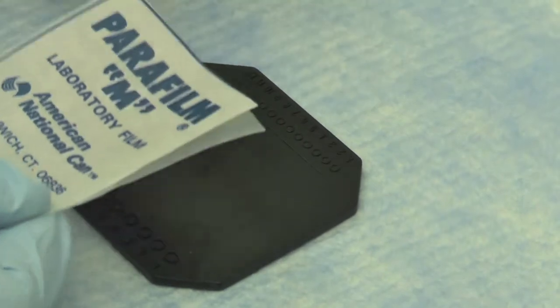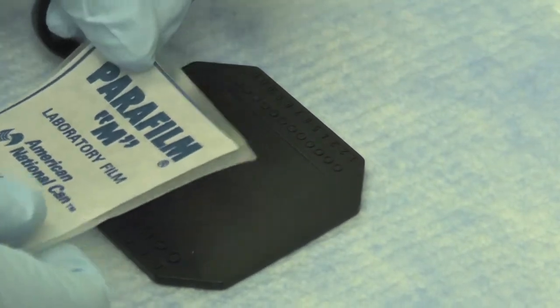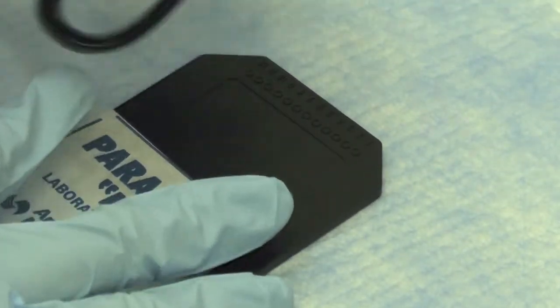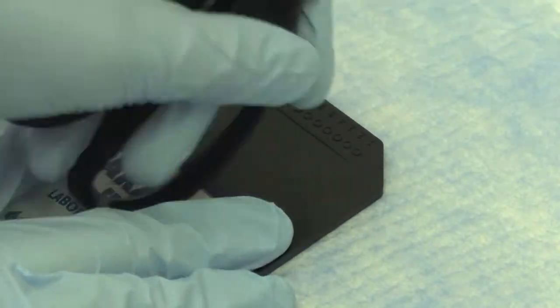Put parafilm with the wipe piece on the sample holder to cover the circles. Use the handle of a pair of scissors to press the parafilm down on the sample holder.